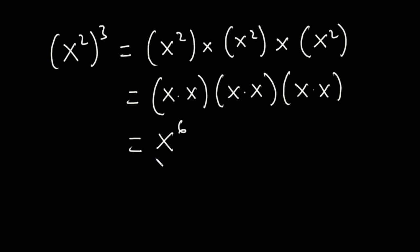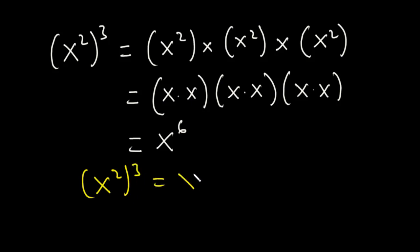What this primarily means is that if you want to raise an exponent to a power, you simply multiply them. So x squared exponent 3 means x exponent 2 times 3, which is equal to x exponent 6.